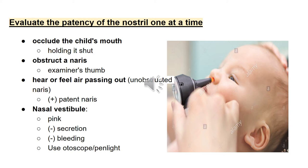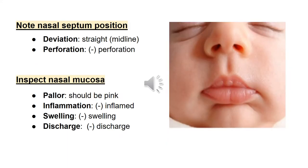The nasal vestibule is pink in color with no secretion and no bleeding. An otoscope or pen light can be used. Note the nasal septum position — the deviation of the nasal septum should be straight at the midline. Also note for perforation. Inspect the nasal mucosa for pallor; the nasal mucosa should be pink in color. Also inspect for inflammation, swelling, and discharge.